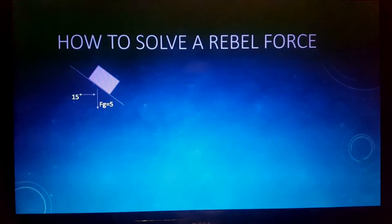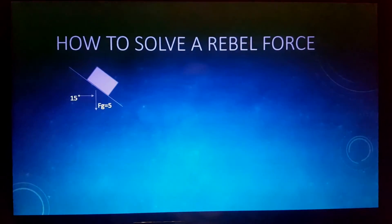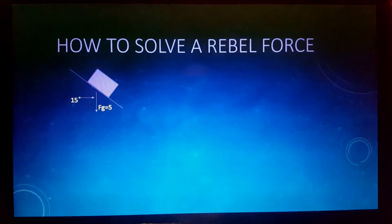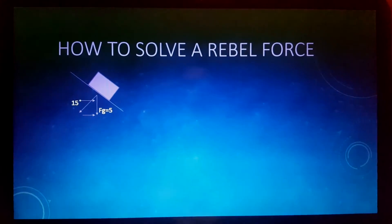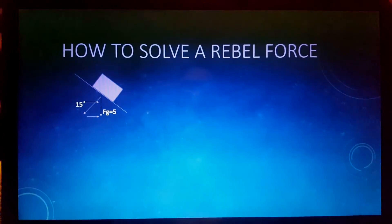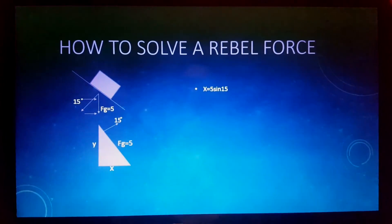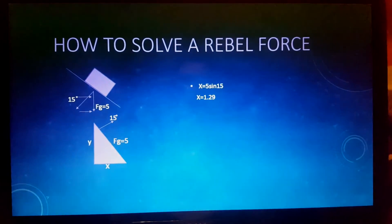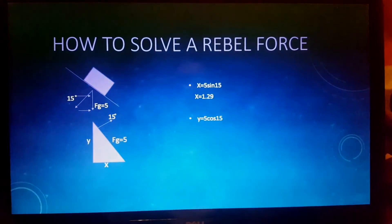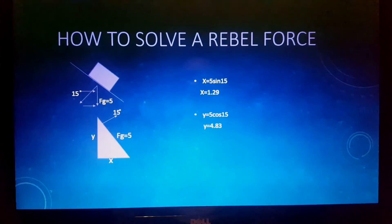How to solve a rebel force. First, one must find the force of gravity, the fg. Next, draw a line perpendicular to the incline of the object. Finish by making a perfect 90-degree triangle. And now one can use trig to solve the rest. The X direction will be X equals 5 sine of 15, which equals 1.29. The Y direction will be Y equals 5 cosine of 15, which equals 4.83.